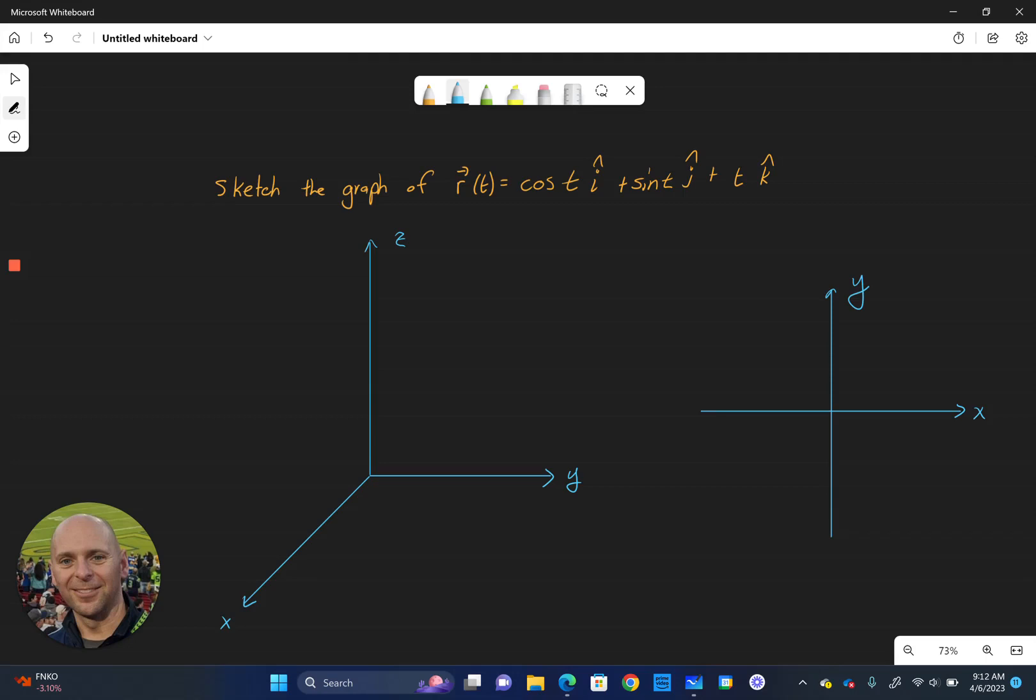We're asked to sketch the graph of our vector-valued function here, and I've sketched out some grids for us so that we can view this from two different ways. We're going to try and sketch the graph of it using three dimensions, and then we'll look at it from the top down as well.